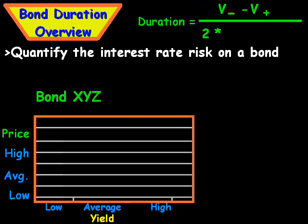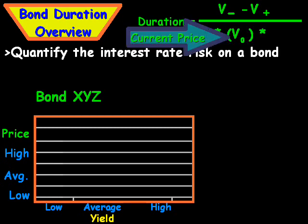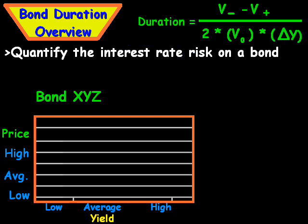And then we're going to take this formula, we're going to divide that by 2 times V0, which is the current price of the bond. And then we multiply that times the change in yield, or the expected change in yield for a rate shock. And that gives us a line that looks something like this. It says duration.